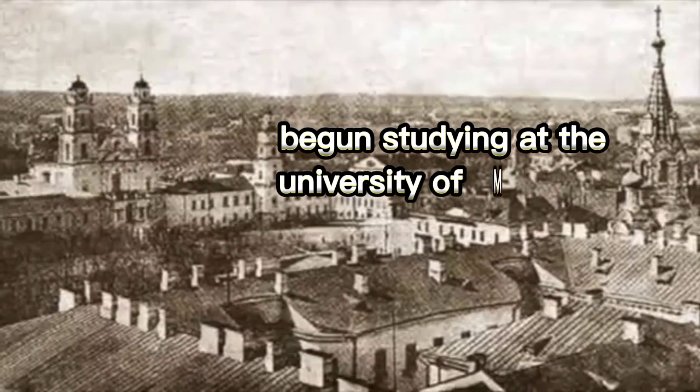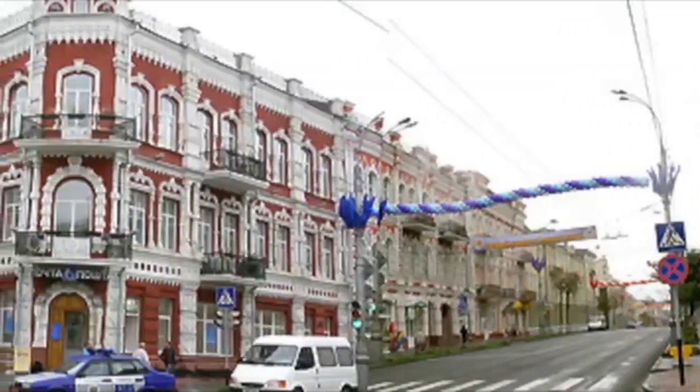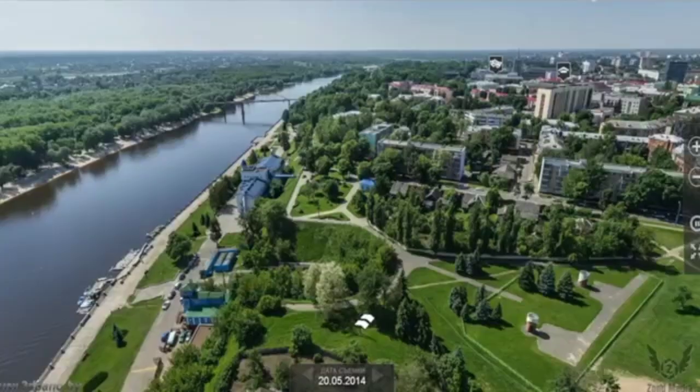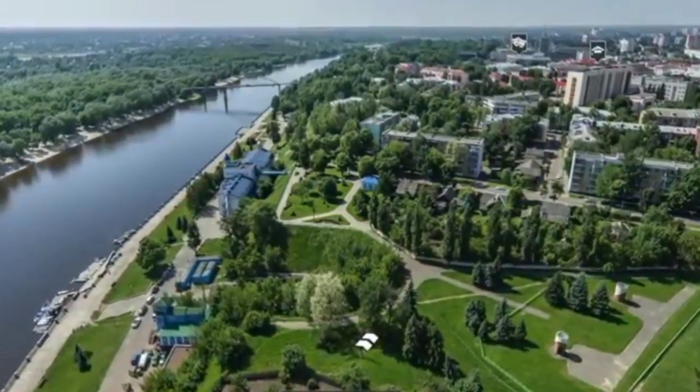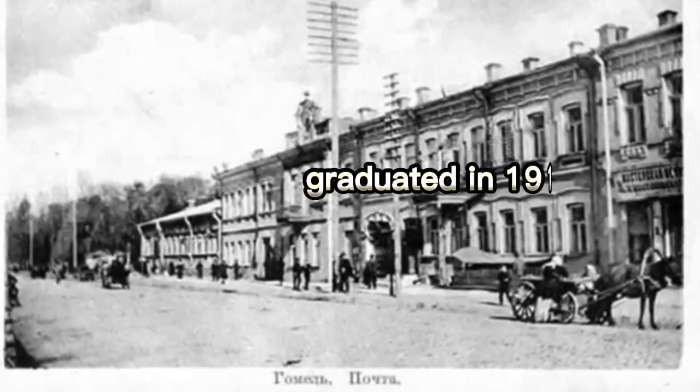Vygotsky began studying at the University of Moscow in 1913 though his course options were severely restricted because he was Jewish. Vygotsky elected to study law and he graduated in 1917.